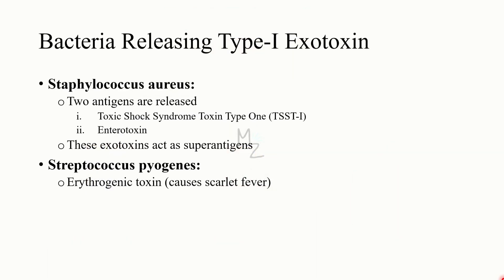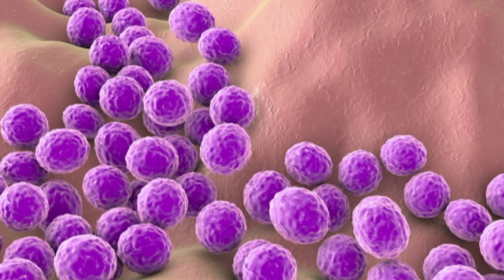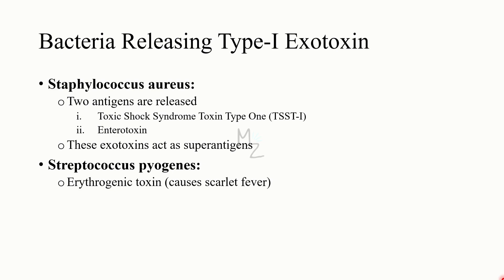Now let's talk about the bacteria responsible for releasing each type. For type 1, there are two bacteria. First, Staphylococcus aureus releases two toxins: toxic shock syndrome toxin type 1 (TSST1) and enterotoxin. These act as superantigens, as discussed. The second is Streptococcus pyogenes, which releases erythrogenic toxin responsible for causing scarlet fever.